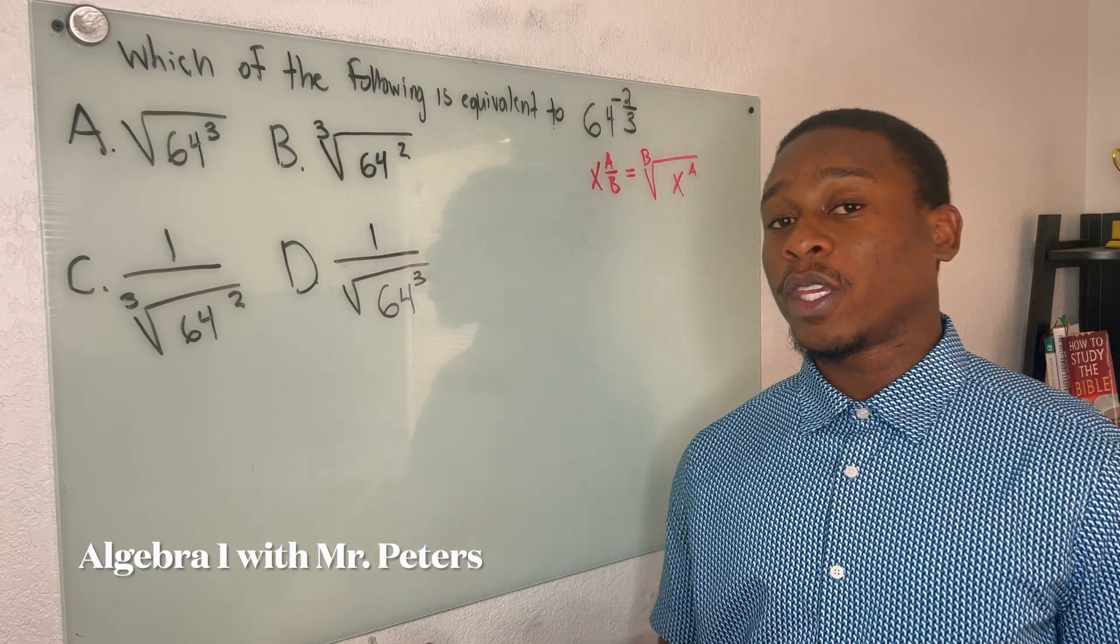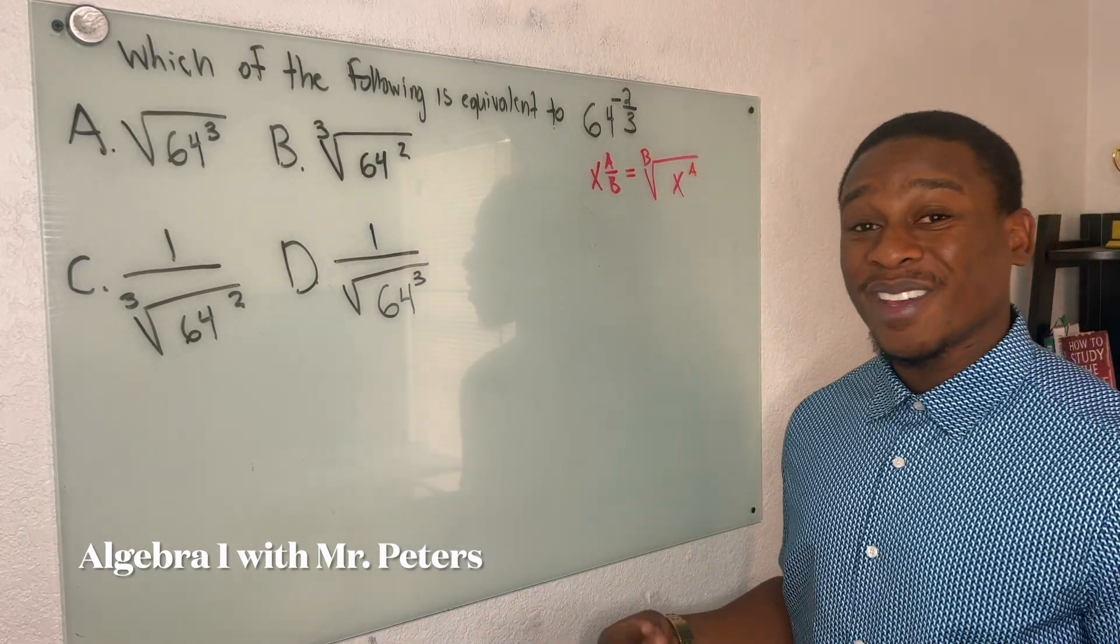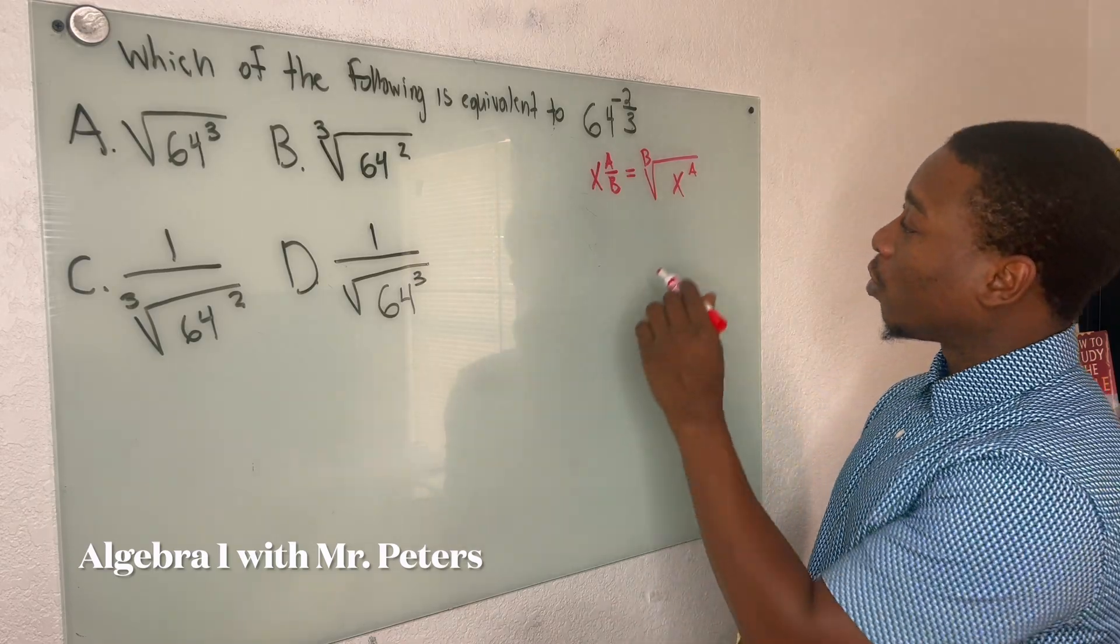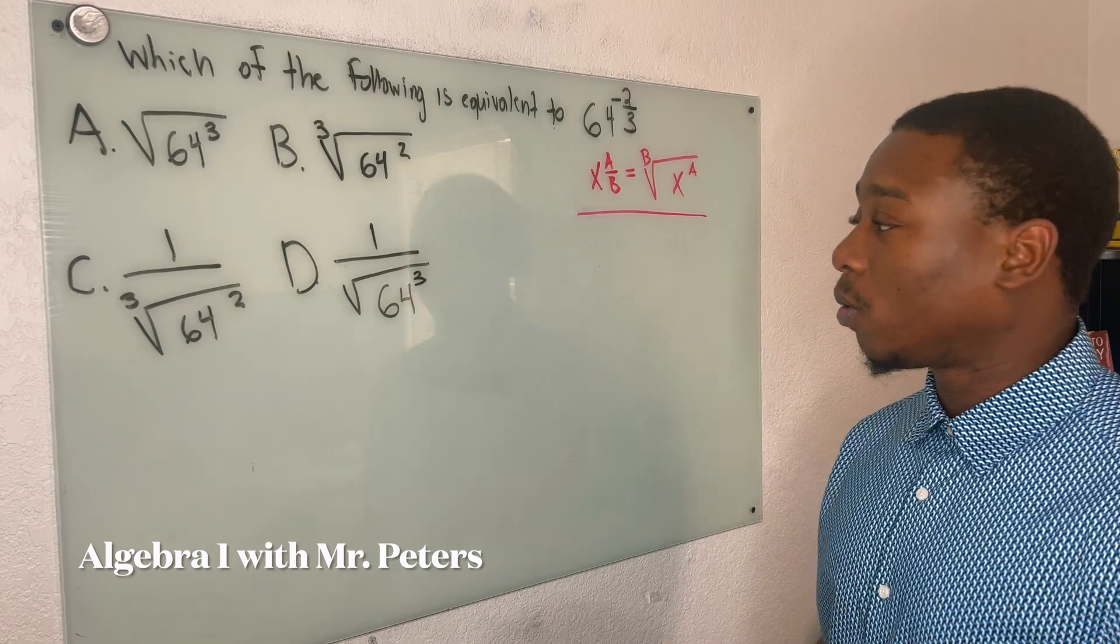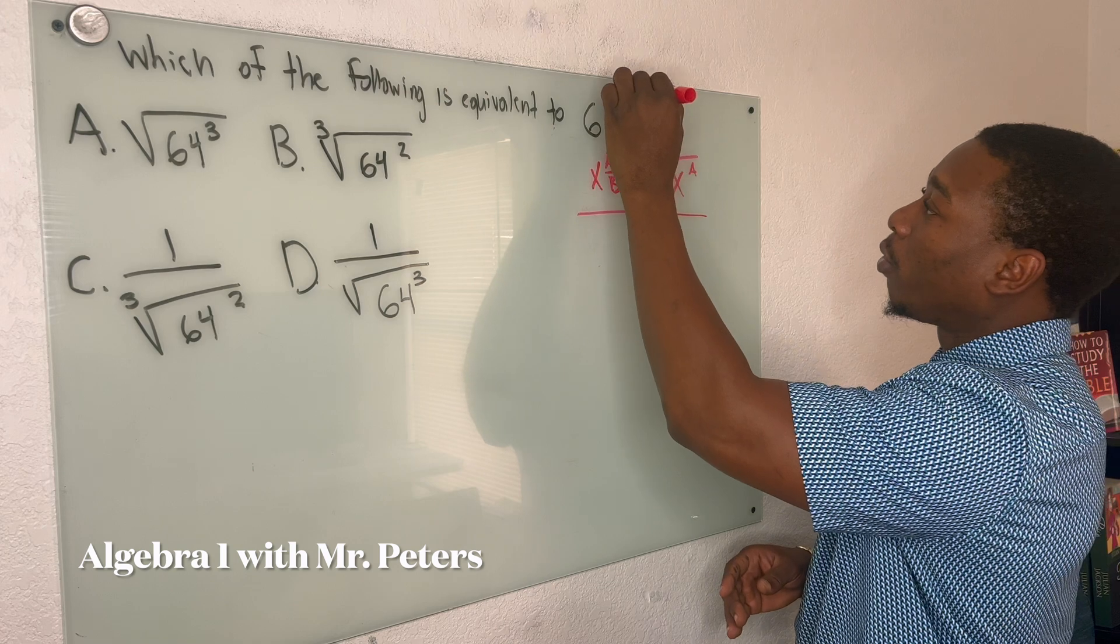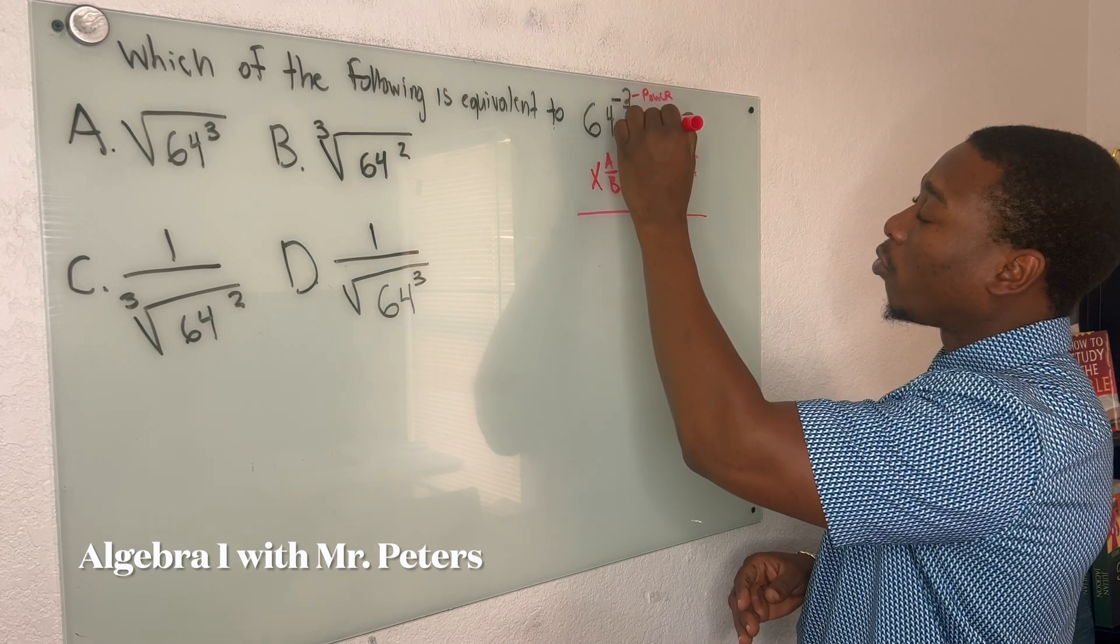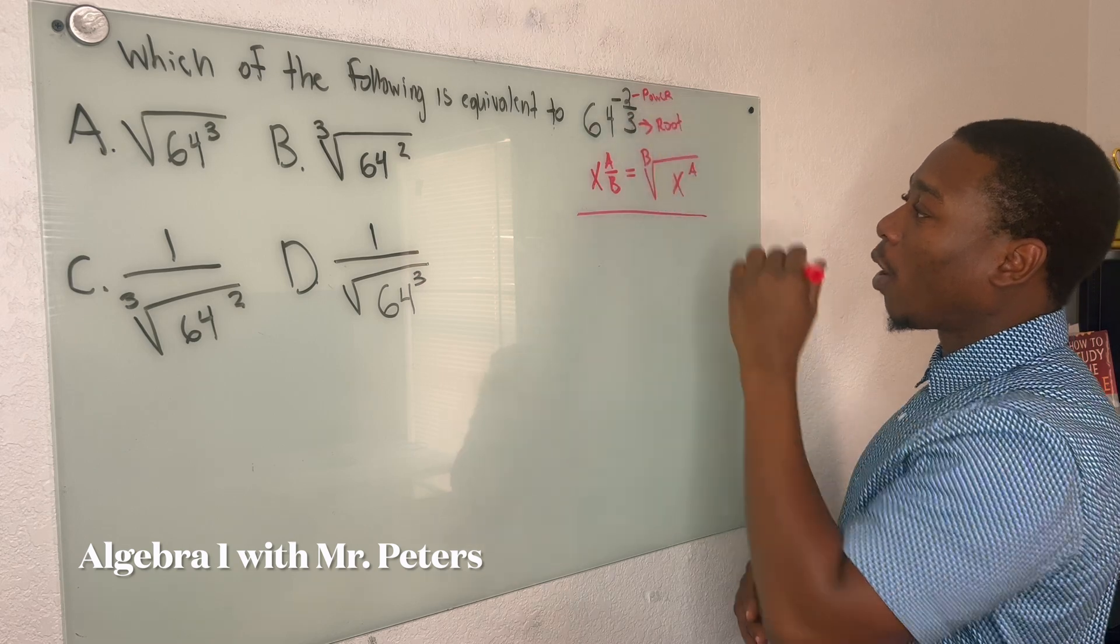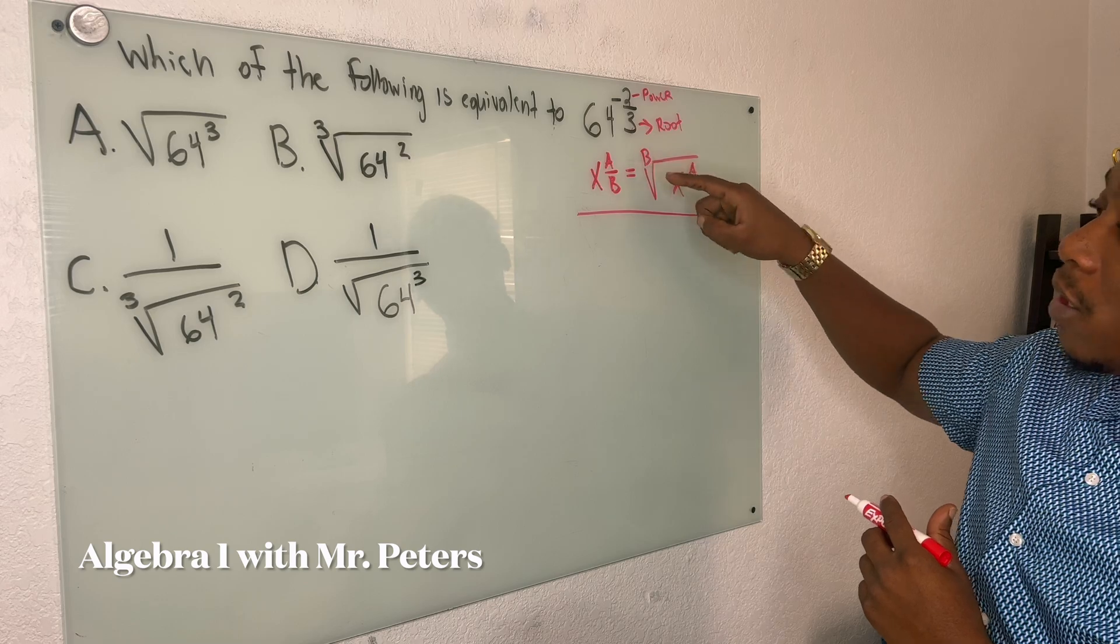So we're moving forward with the EOC review. And now we're talking about negative exponents and fractional exponents. So this is an important rule. When we're rewriting our fractional exponents, we need to know that with 2 over 3, our top number represents our power and our bottom number represents the root. And A is going to be our power. B is going to be the root.